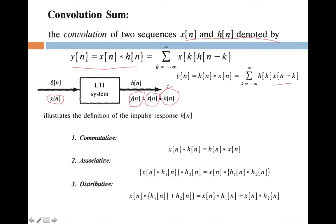We need to know how to determine convolution summation of two different sequences. Before that, I would like to tell you three different important properties of convolution summation. One is commutative, associative, and distributive. These are the three important properties of convolution summation.